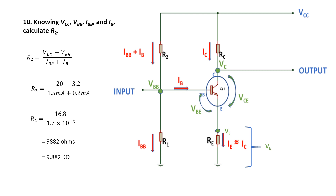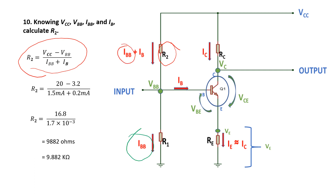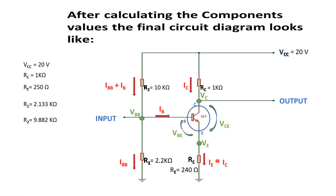Step number ten, the last step for this biasing: we want to calculate R2. From this equation we can easily calculate the value of R2. IBB plus IB flows through R2, so from this equation we can easily calculate the value of R2 after finding out all those values.